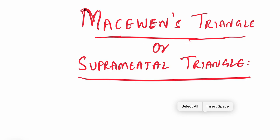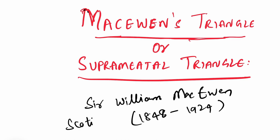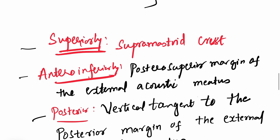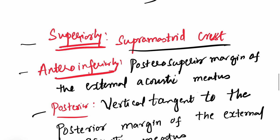This triangle was named after a Scottish surgeon known as Sir William McEwen. To revise: the boundaries of McEwen's triangle are — superiorly by the Supramastoid crest, anteroinferiorly by the posterior superior margin of the external acoustic meatus, and posteriorly by a vertical tangent to the posterior margin of the external acoustic meatus. Clinically, it is the approach for cortical mastoidectomy. Please like and share our channel.